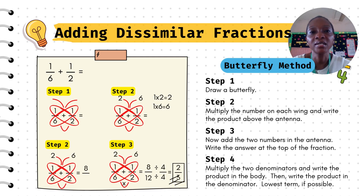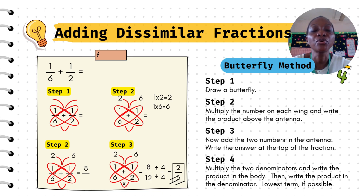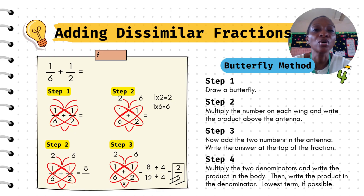Now let's talk about how to add similar fractions using another method called the butterfly method. Step 1: draw a butterfly diagonally through the two sets of numbers. Step 2: multiply the number on each wing and write the product above the antenna. Step 3: add the two numbers in the antenna and write the answer at the top of the fraction. Step 4: multiply the two denominators and write the product in the body.